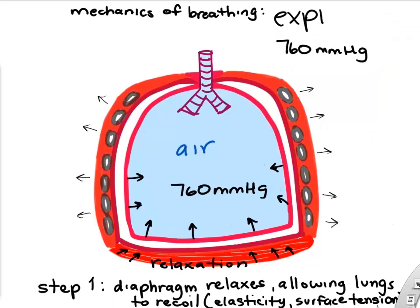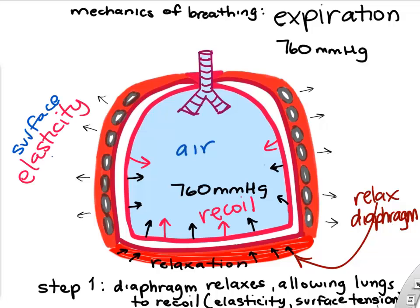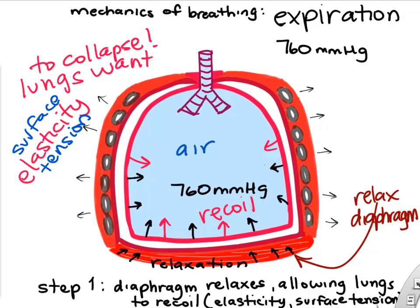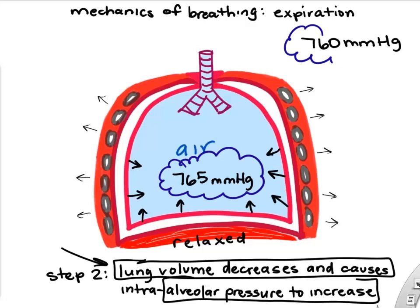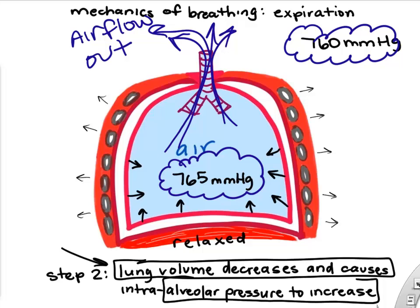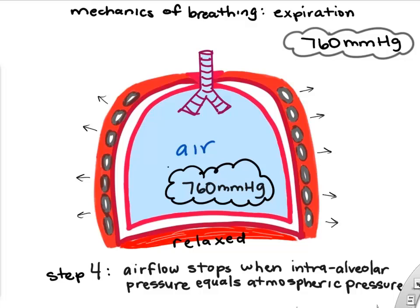To expire, we simply relax our diaphragm. The elastic lungs recoil due to elasticity and surface tension, decreasing lung volume, which increases the intra-alveolar pressure — say to 765 mmHg — now higher than atmospheric pressure. This pressure gradient causes airflow out of the lungs. Once the alveolar pressure and atmospheric pressure equalize, airflow stops and we're at end expiration.